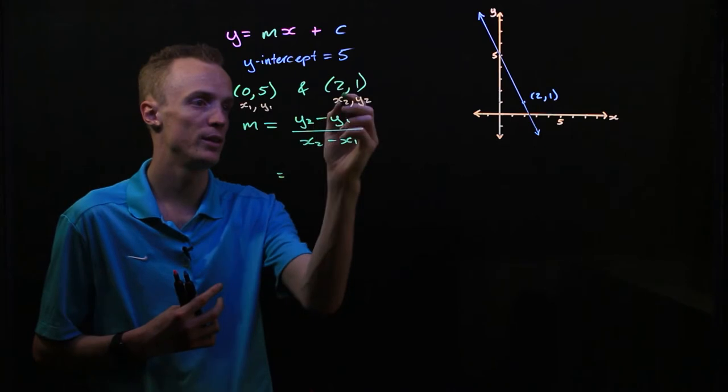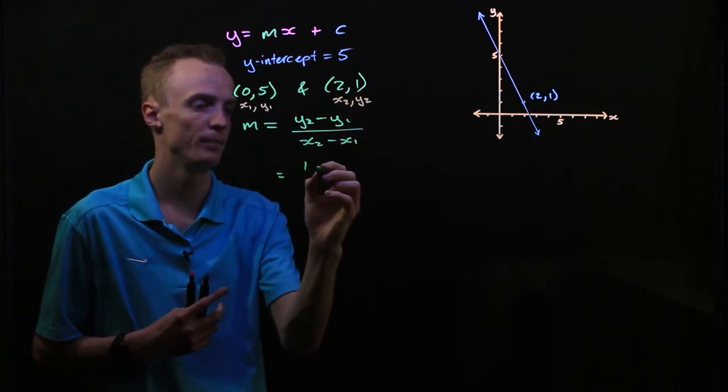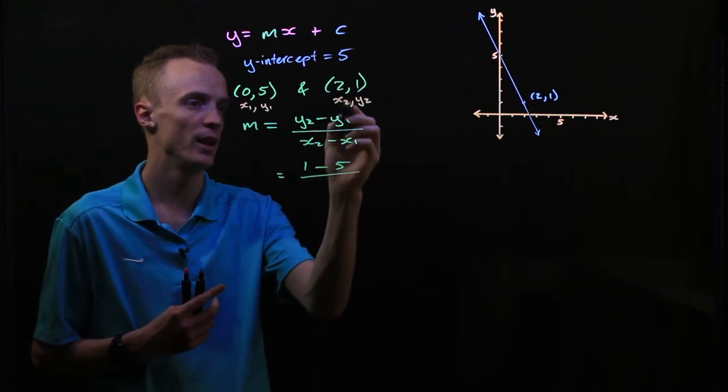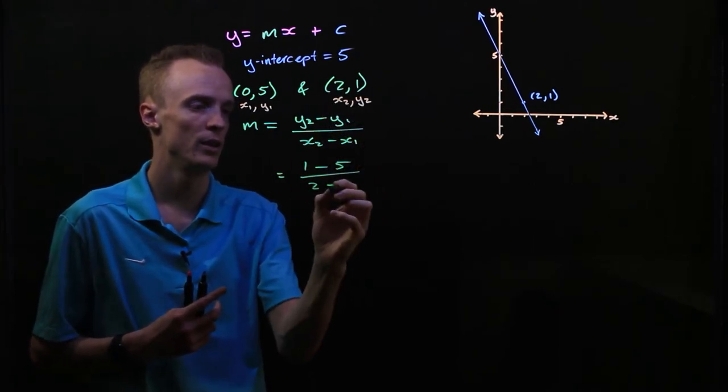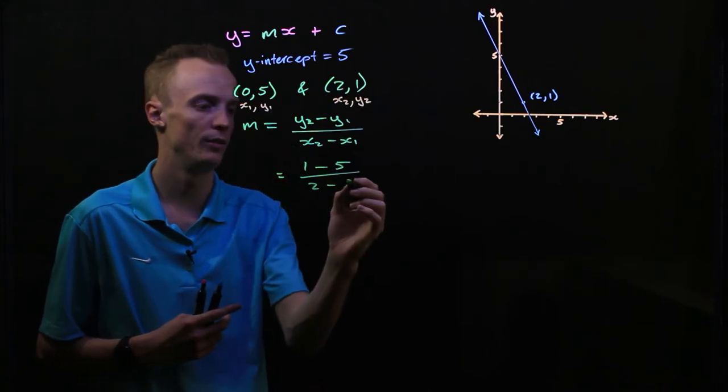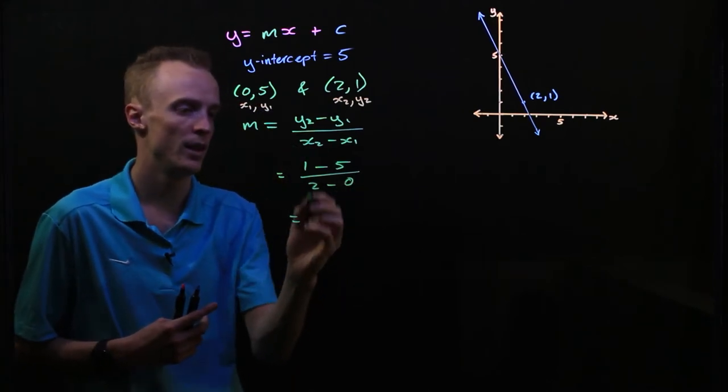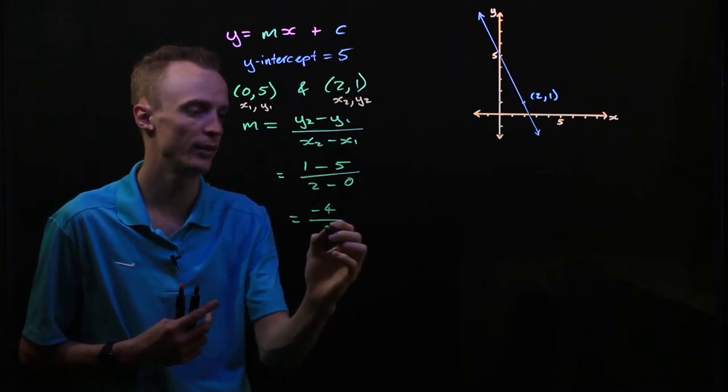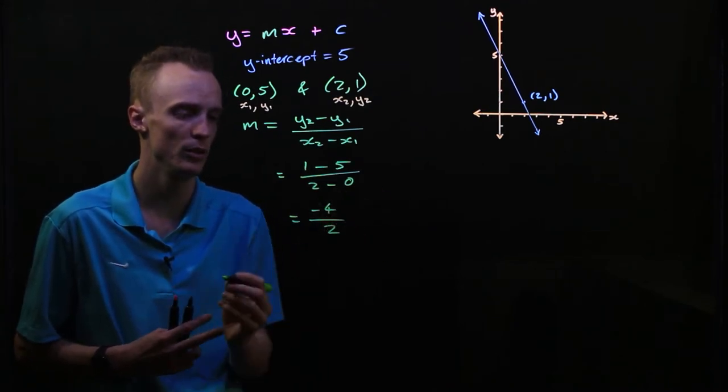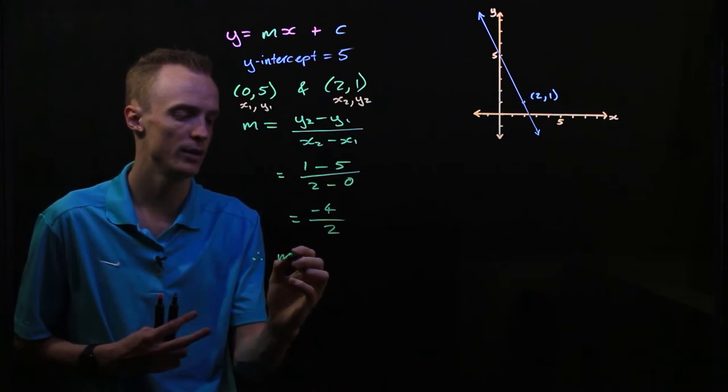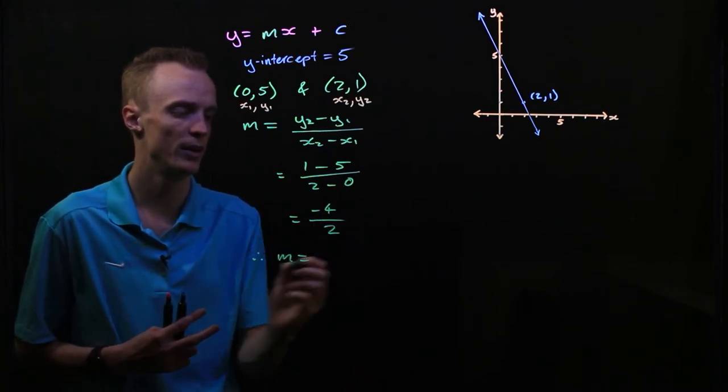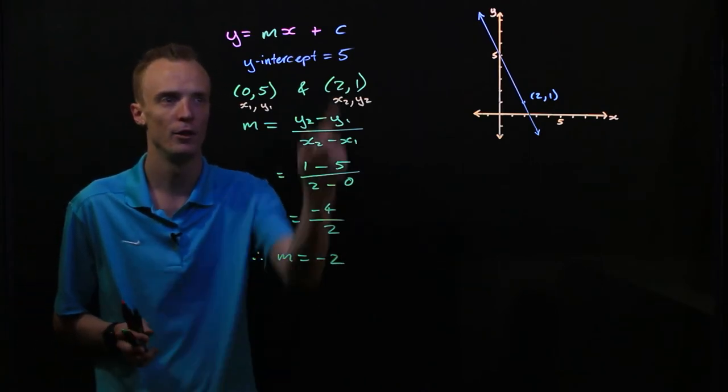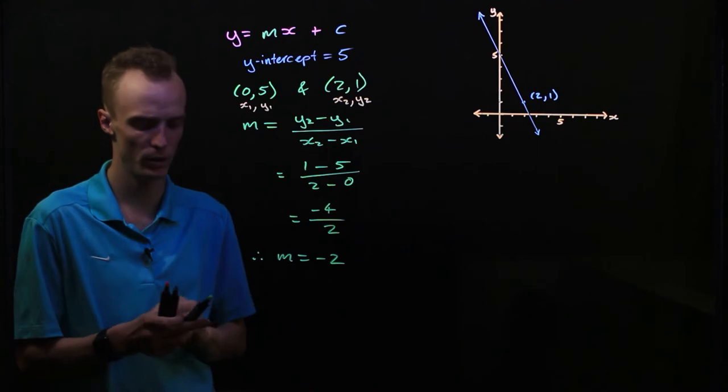My y2 is equal to 1, subtract my y1 value of 5, and that's going to be divided by my x2 of 2 subtract my x1 of 0. Now 1 subtract 5 is negative 4, divided by 2 subtract 0 is just equal to 2. Therefore my slope is equal to negative 4 divided by 2, which is negative 2. So my m value is equal to negative 2.